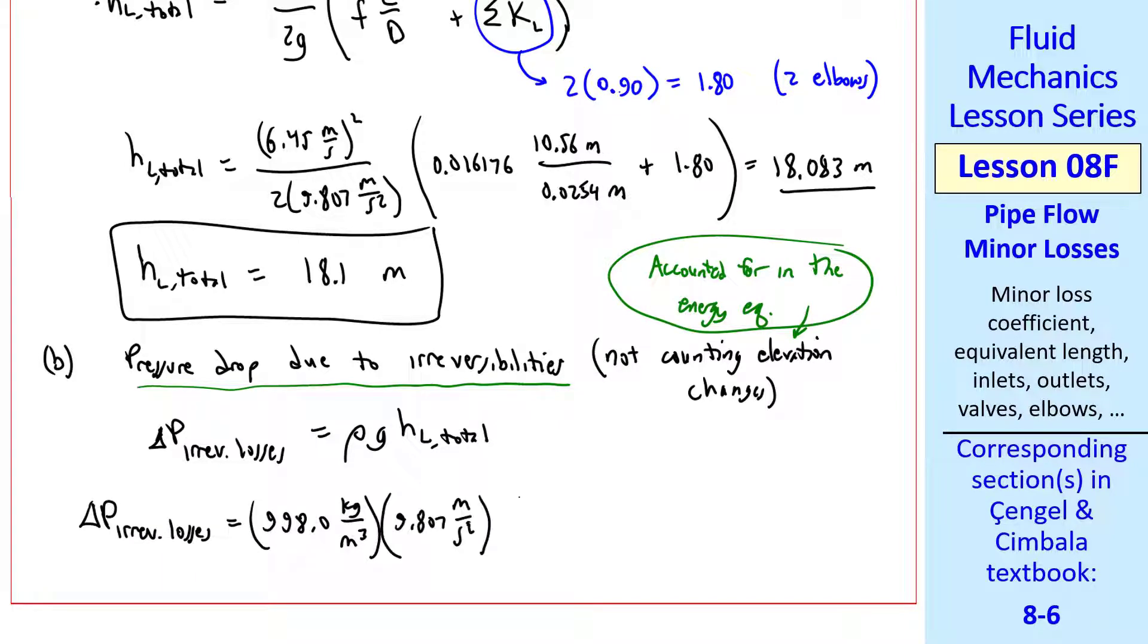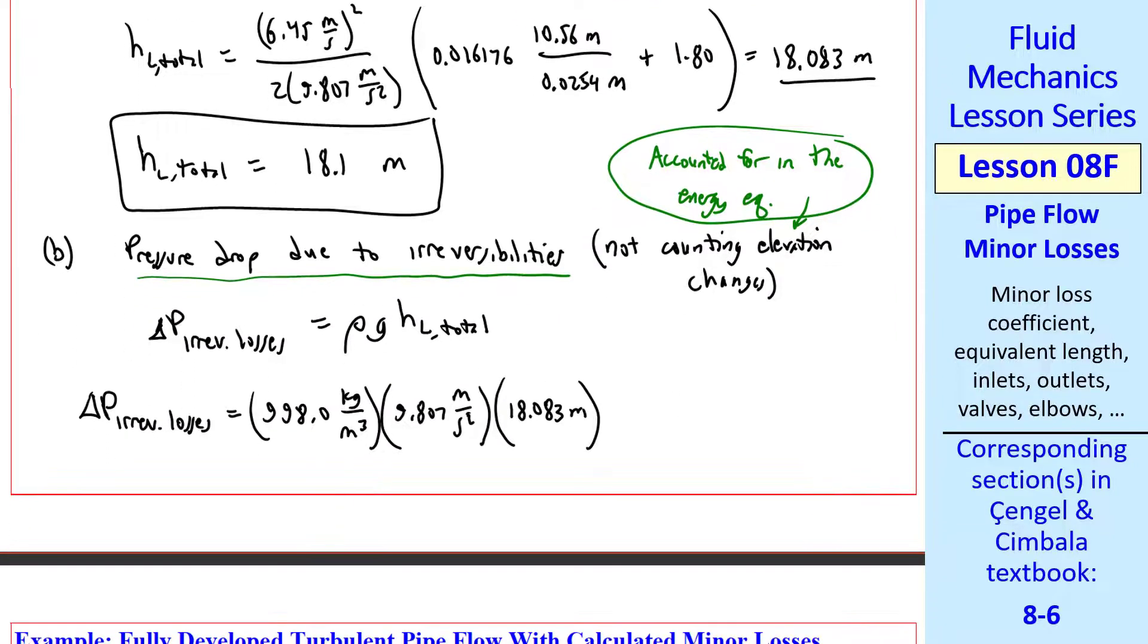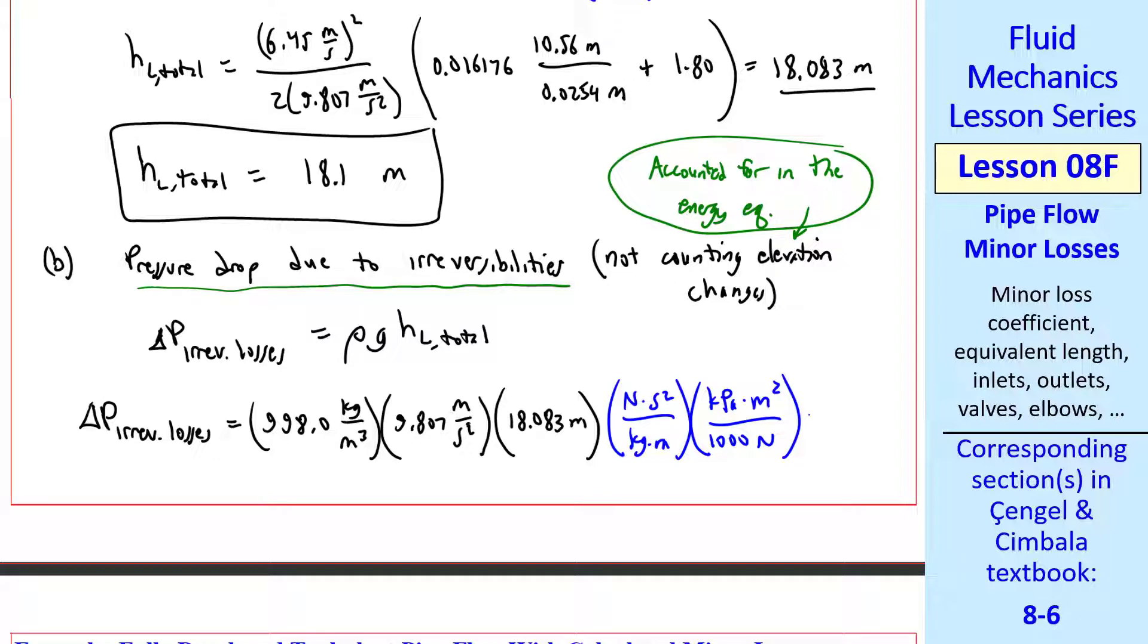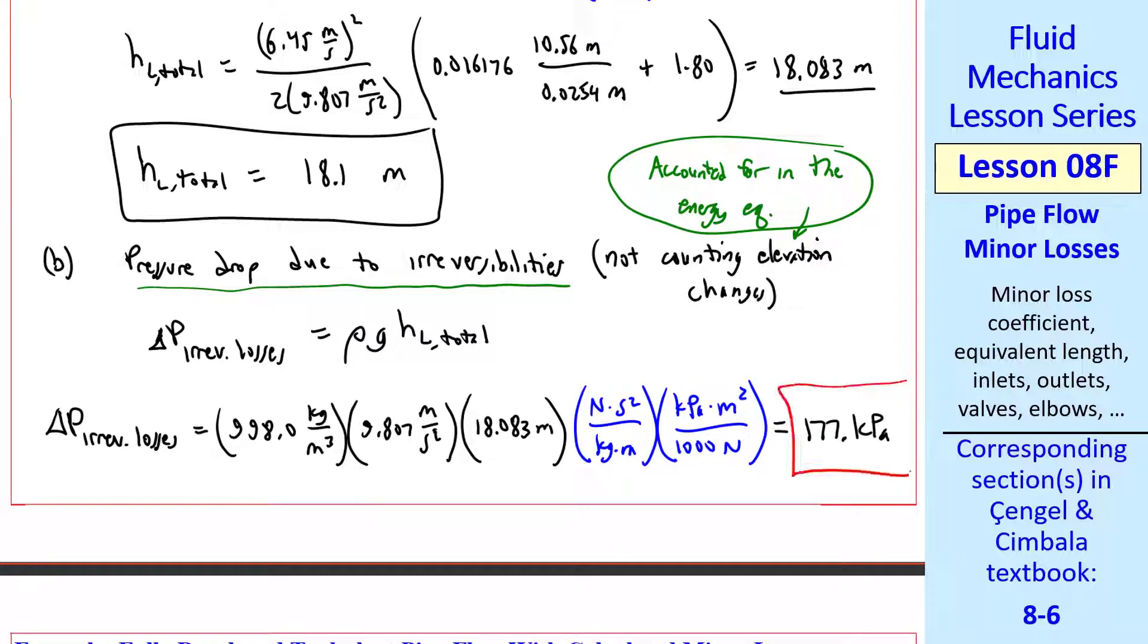We plug in rho G and HL total, and two unity conversion factors. I get 177 kPa.